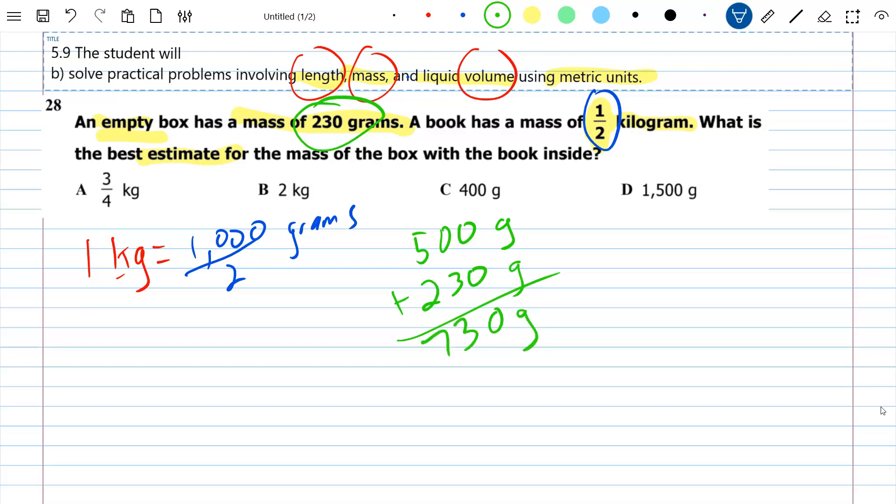But look at my answer choices. I've got to look at three-fourths kilograms, two kilograms, 400 grams, 1,500 grams. I'm going to do some process of elimination here. I'm going to attack my answers right away.